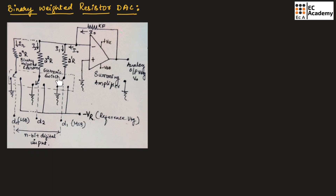As you can observe here, the electronic switch is connected to the ground and to the reference voltage, which is minus VR. In the circuit, if the value of D is equal to 0, this switch will be connected to ground. And if the value of D is equal to 1, this switch will be connected to the reference voltage. This is how the digital data is connected to the circuit.